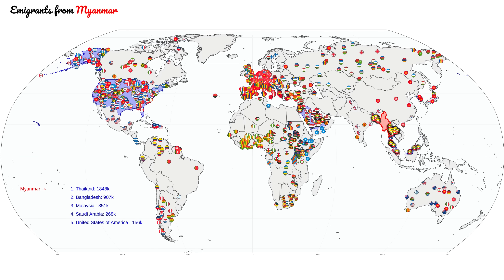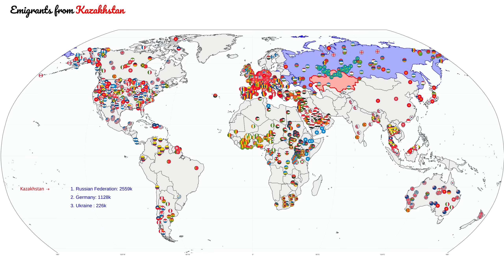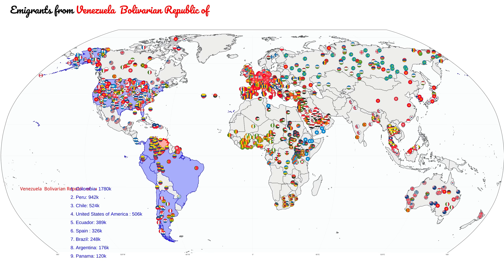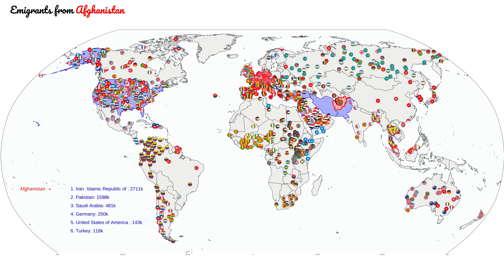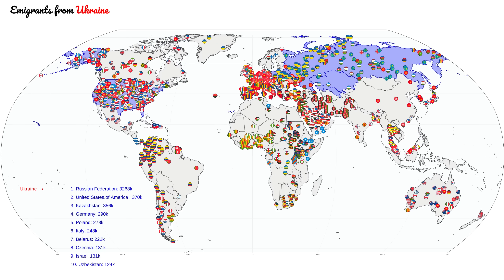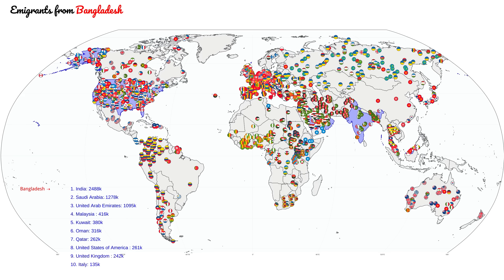We're now getting close to the final 10. The common denominator here is that they are all big countries with various hardships. At number 10 and 8 we have Afghanistan and Ukraine, who both have been in war for a long period of time. At 7 and 6 we have Pakistan and Bangladesh, which are huge countries with much poverty.